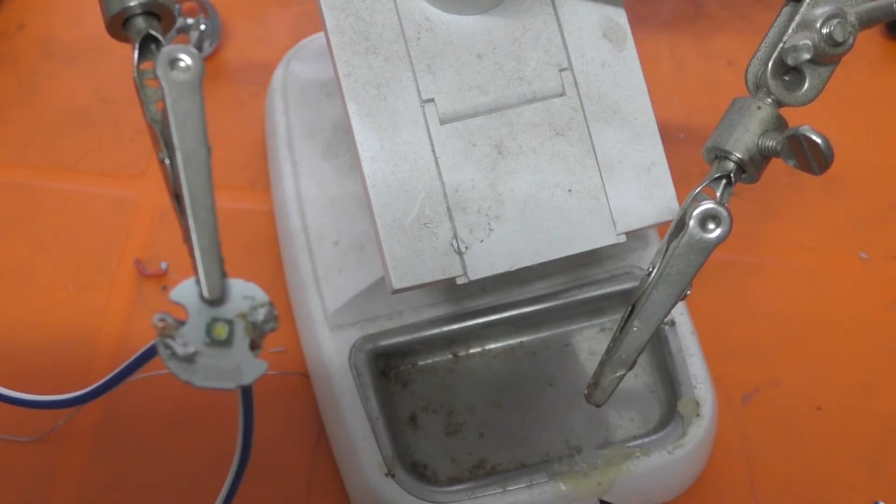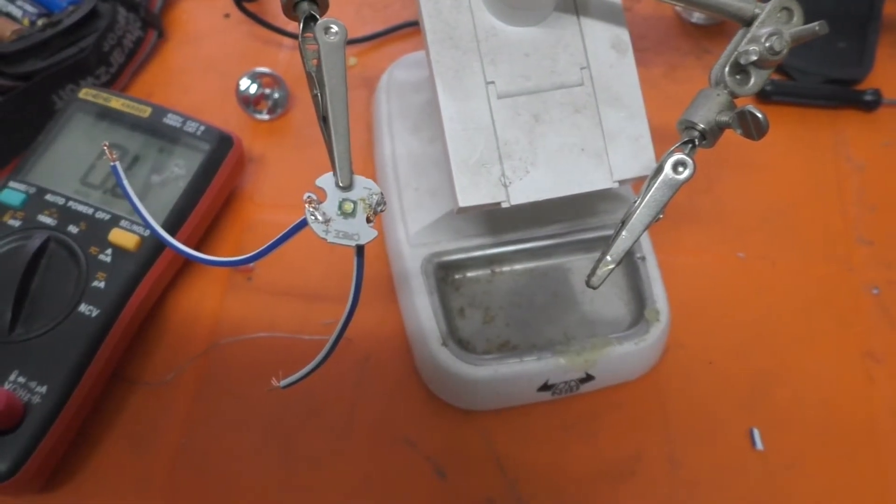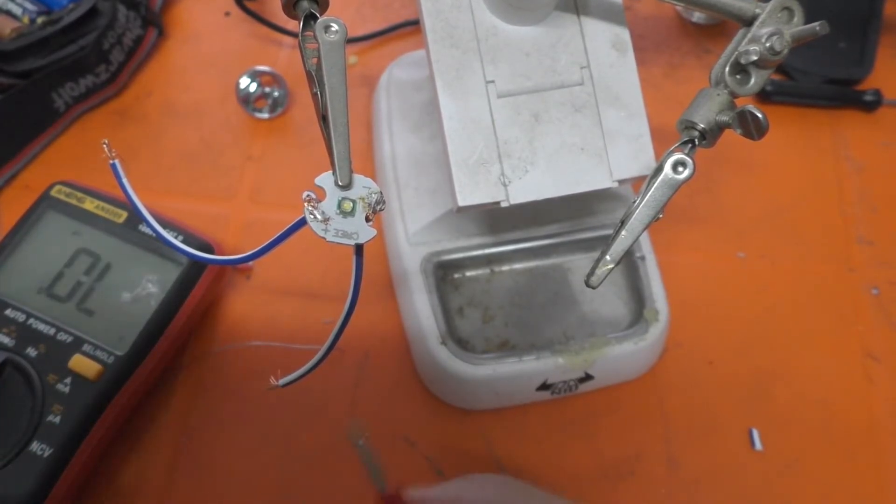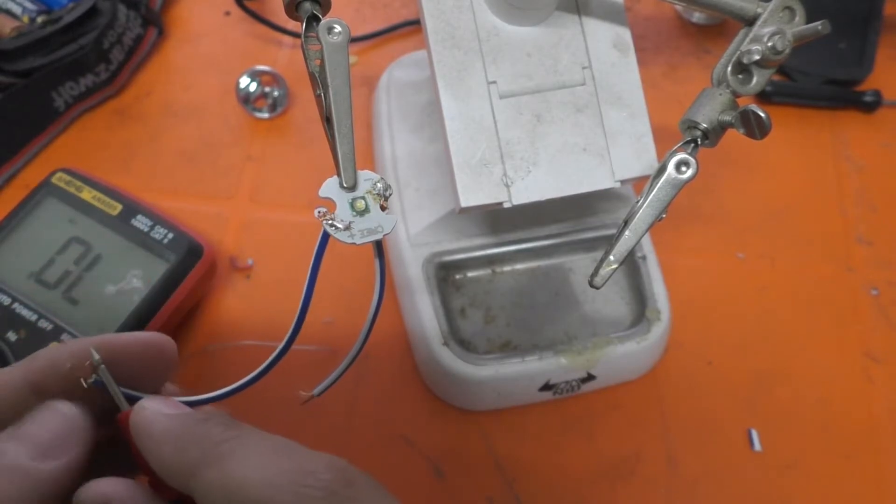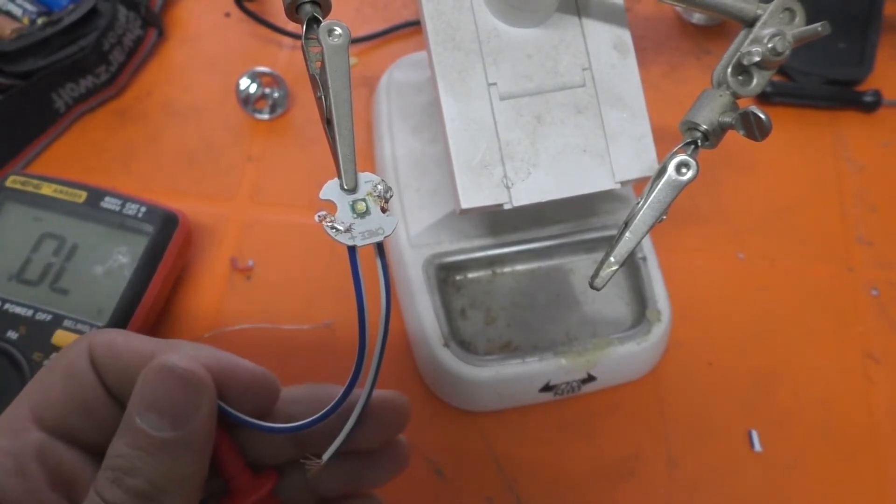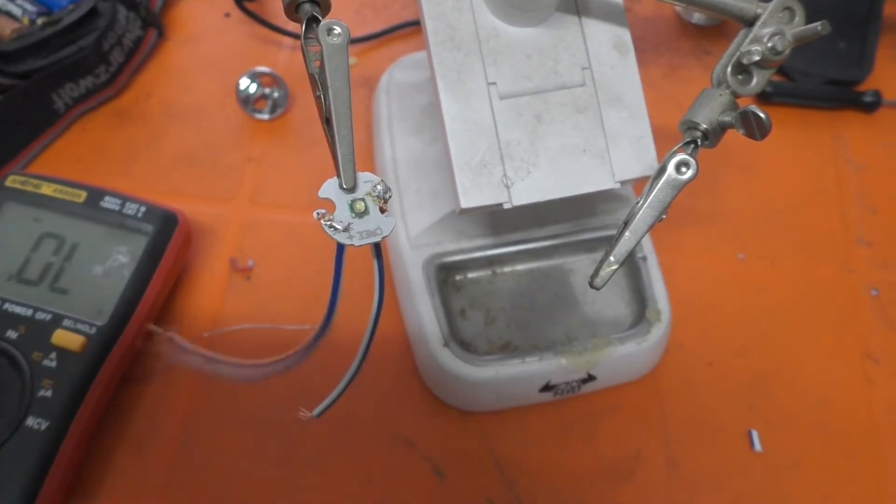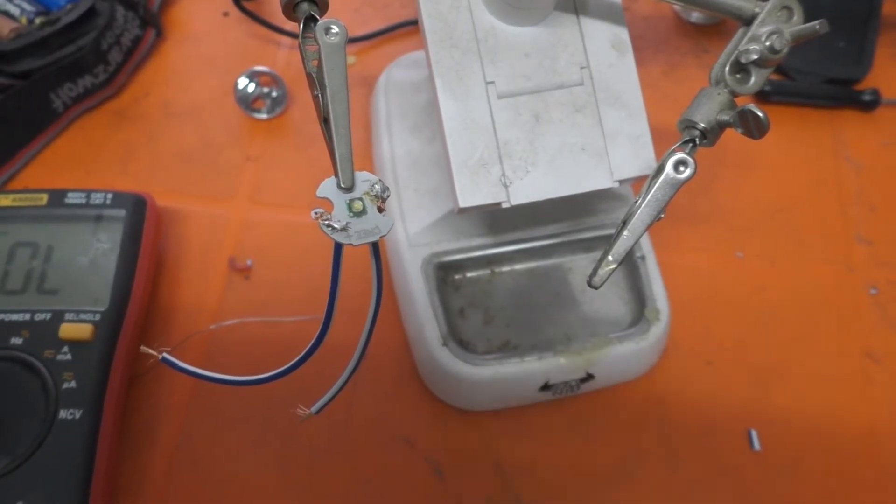And one last check is to put the multimeter again on the diode mode and grab the wires to make sure the connection is actually made. It is fine, now let's go to the next step.